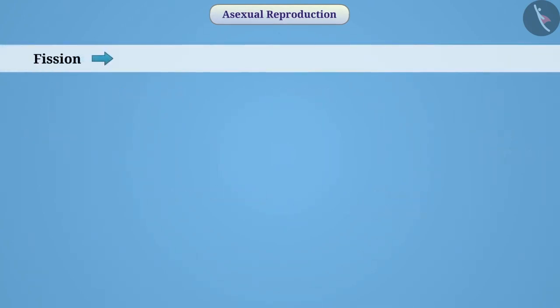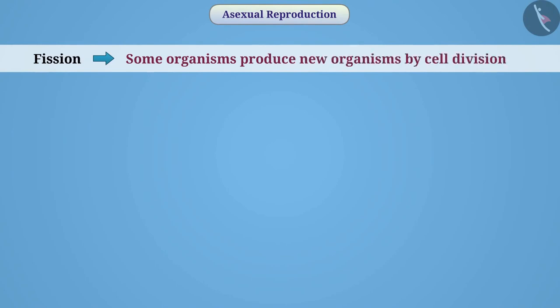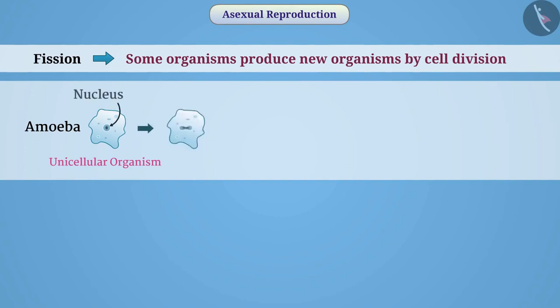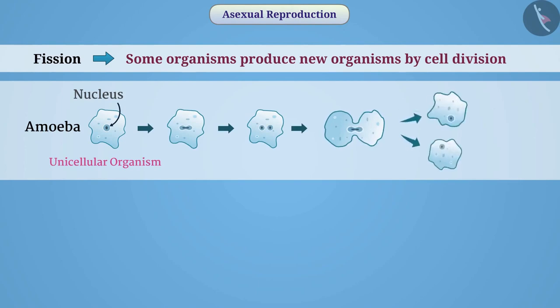Fission: Some organisms produce new organisms by cell division — we call this method fission. Amoeba is a unicellular organism. In amoeba, reproduction begins with the division of the nucleus. When division of the nucleus is complete, the cell divides into two parts. This division can occur from any part of the amoeba, and each resulting cell carries one nucleus. The formation of two cells by the division of one cell is called binary fission.